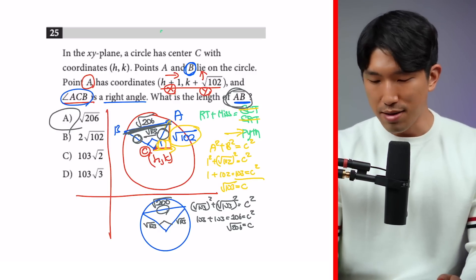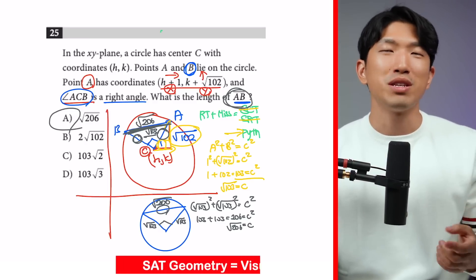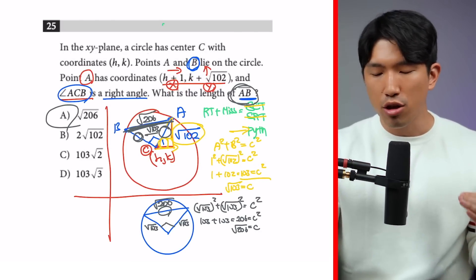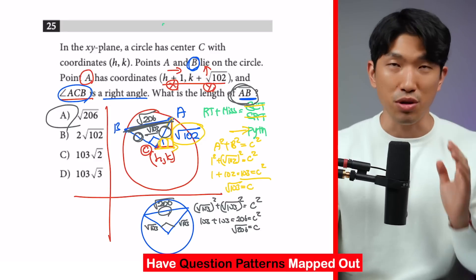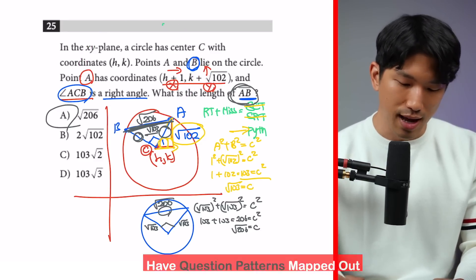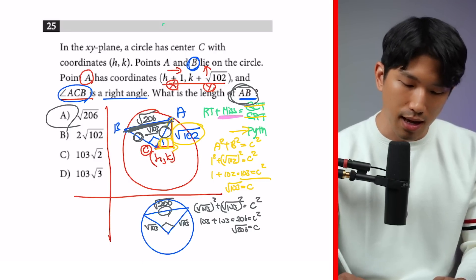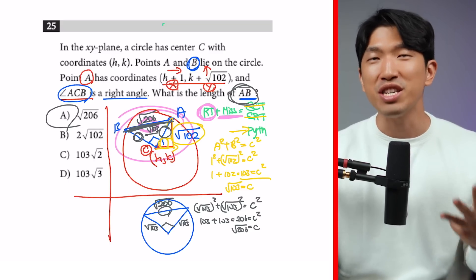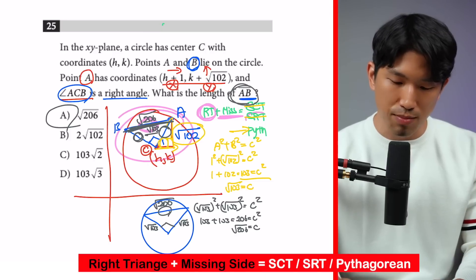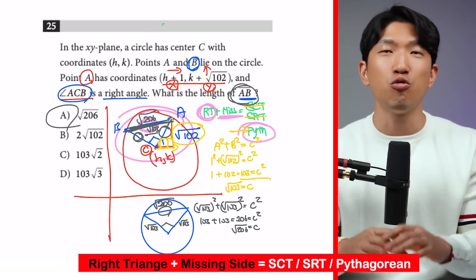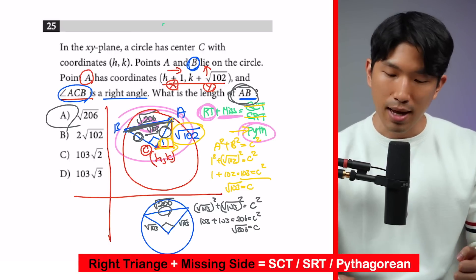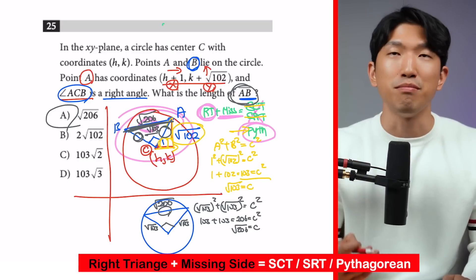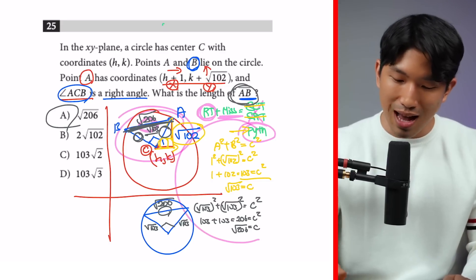It involved a lot of steps, but here are the main takeaways: always visualize what the question is telling you and stay organized. More importantly, map out in your head what types of questions the SAT will give you. When we visualized this, we realized we were simply looking for a missing side in a right triangle. On the SAT, only three methods apply: SOHCAHTOA, special right triangles, or Pythagorean theorem. Since the first two require angles and we had none, Pythagorean theorem was the answer. SAT becomes much easier when you have these frameworks mapped out.